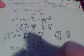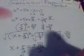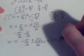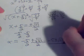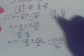I get negative five over two plus or minus the square root of 33, sorry about that, over two. And that is completing the square with fractions.